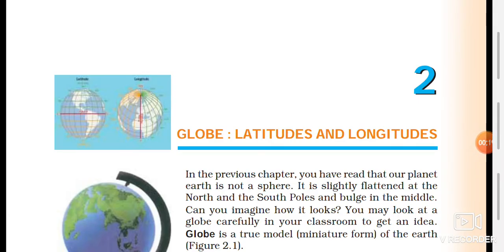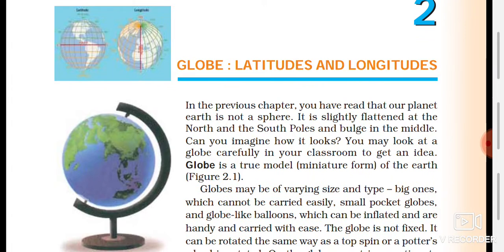So let's start. In the previous chapter you have read that our planet Earth is not a sphere — it is slightly flattened at the north and the south poles and bulges in the middle. You may look at the globe carefully in your classroom to get an idea. The globe is a true model of the Earth. Globe is the Earth's model.